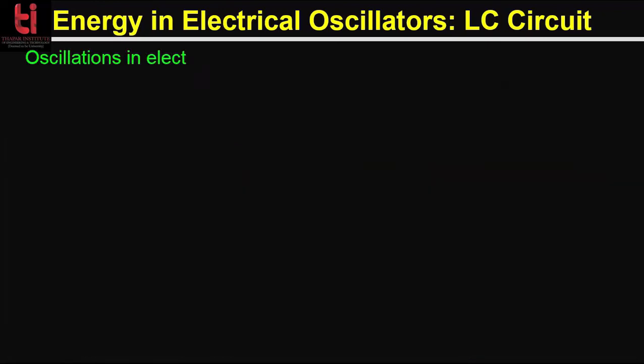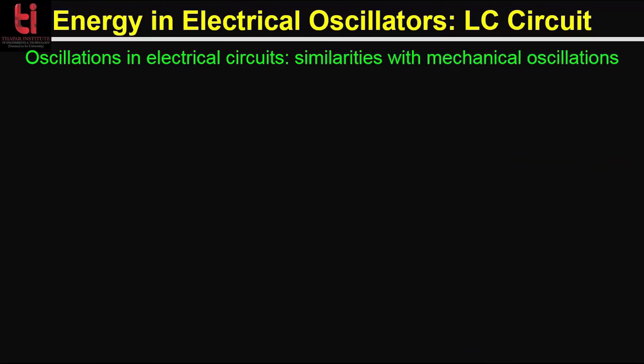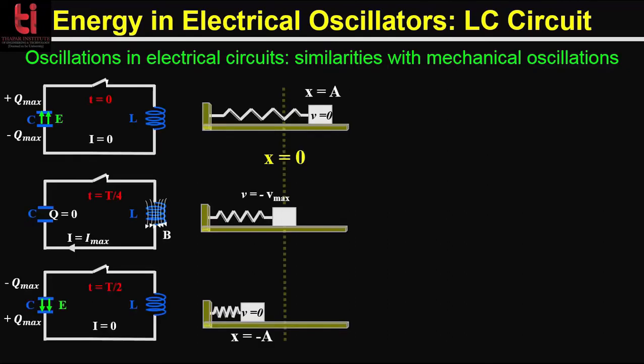So now we are going to compare this electrical oscillator with the spring-mass system, which is an example of a mechanical harmonic oscillator. With the initial condition that at t = 0 the charge on the capacitor has its maximum value Q = Q_max, no current is flowing in the circuit so there is no energy contribution from the inductor. This is equivalent to the expanded spring-mass system where velocity equals zero and the energy is all potential.